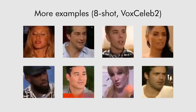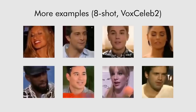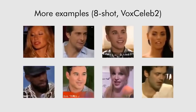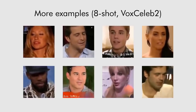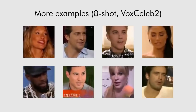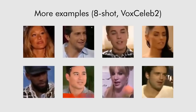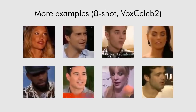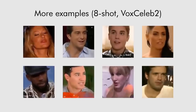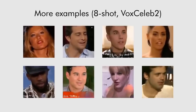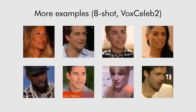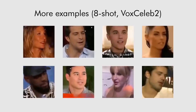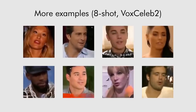Here we show more results for holdout identities on the VoxCeleb2 dataset that were unseen by the system at the meta-learning stage. These talking head models were obtained using eight frames, although in some cases there was limited diversity between the head poses in those eight frames.